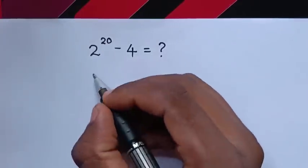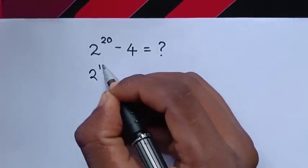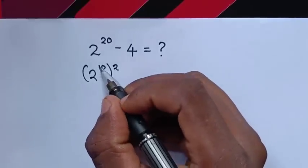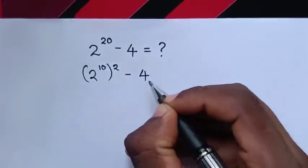From here, 2 power 20 into square will be 2 power 10 bracket square. Power of 10 times 2 is power of 20, then minus 4.